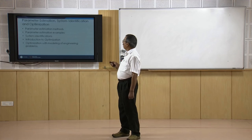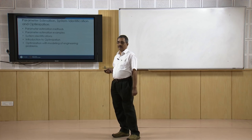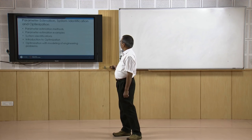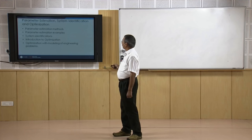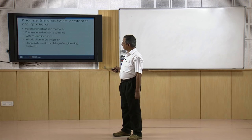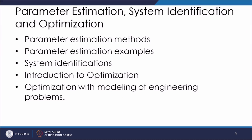In the last module, we will look at some properties of systems, including parameter estimation — how to estimate the various parameters of the system — system identification, and optimization. We will cover parameter estimation methods with examples, system identification, a brief introduction to optimization methods, and optimization with modeling of engineering problems.